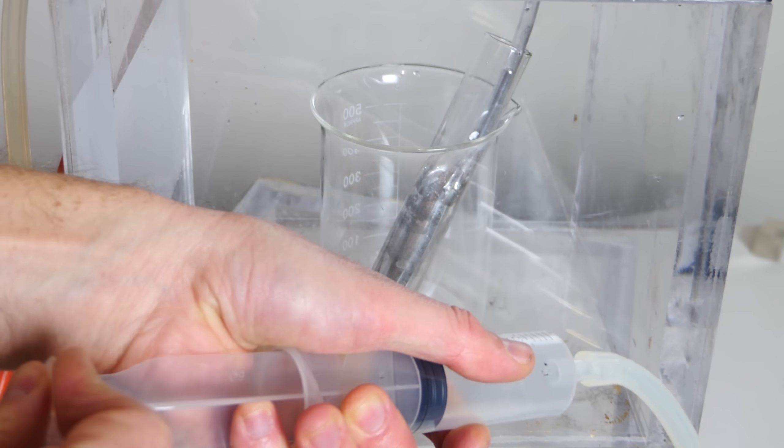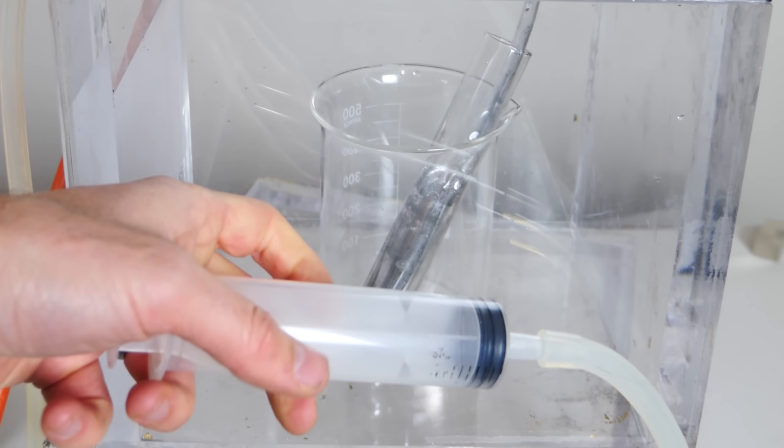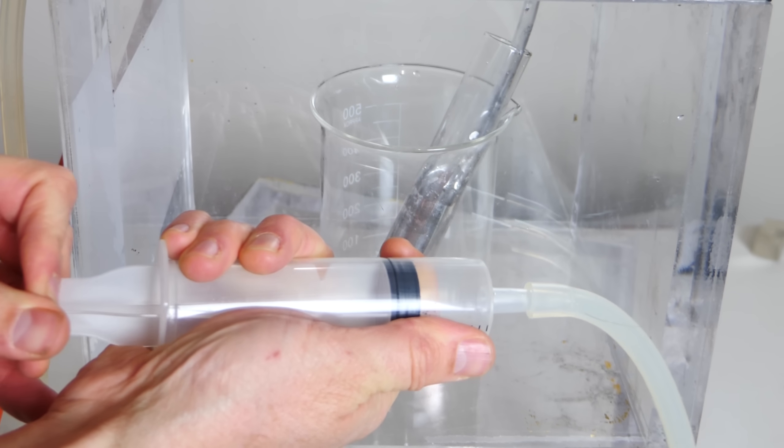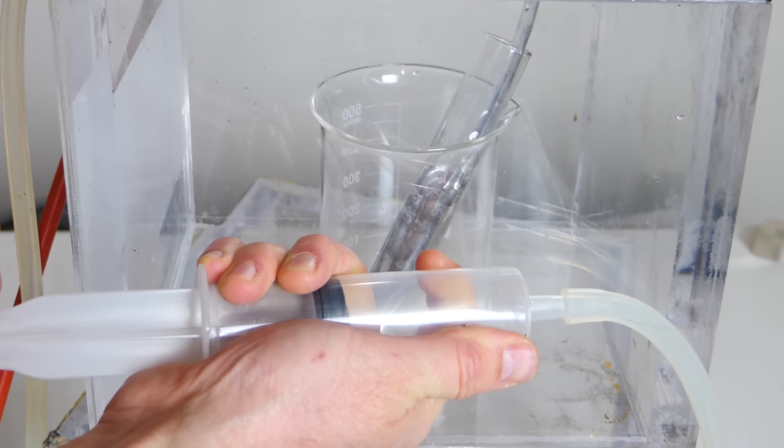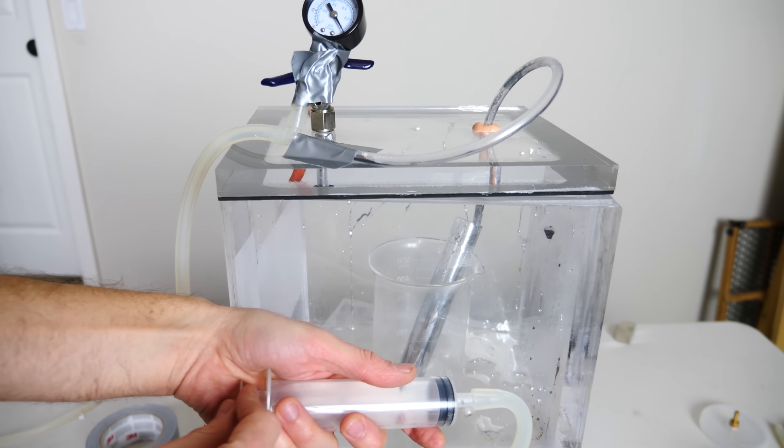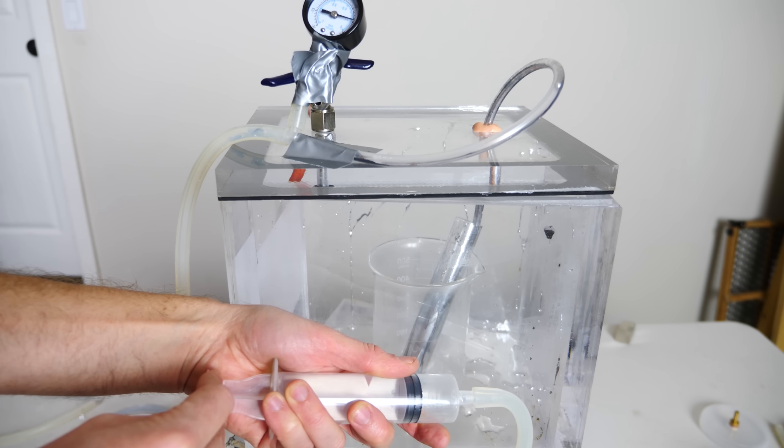But when I was under the full vacuum, I couldn't get it. But here's what's interesting. Notice how much volume I'm pulling in the syringe here. And how it's just barely going up the tube. But now at atmospheric pressure, watch, I just need a little tiny change in volume. And I can suck it all the way up into the tube there.